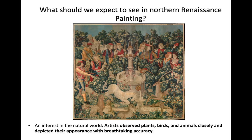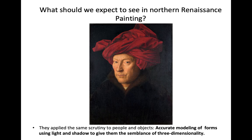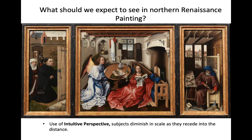So what should we expect to see in Northern Renaissance painting? We will start to see an interest in the natural world — artists observing plants, birds, and animals closely and depicting their appearance with breathtaking accuracy. We'll see the same scrutiny applied to people and objects, with accurate modeling of forms using light and shadow. Remember chiaroscuro from last class? That gives them the semblance of three-dimensionality. There's also the use of intuitive perspective, where subjects diminish in scale as they recede into the distance — not correct one-point perspective yet, but an interesting sense of spatial recession.